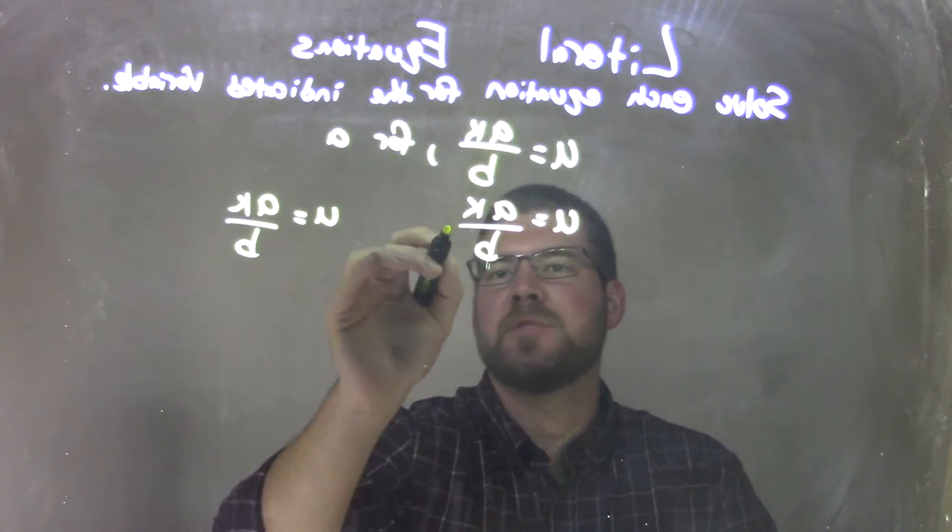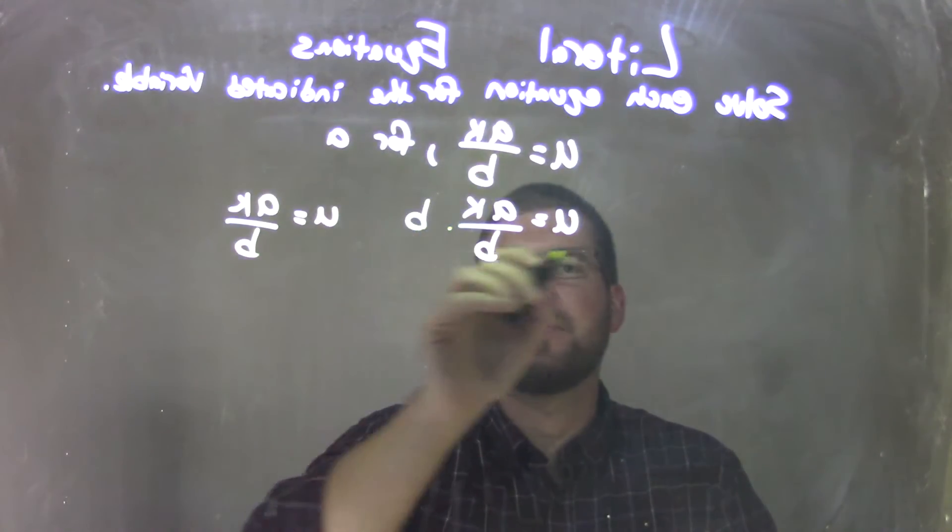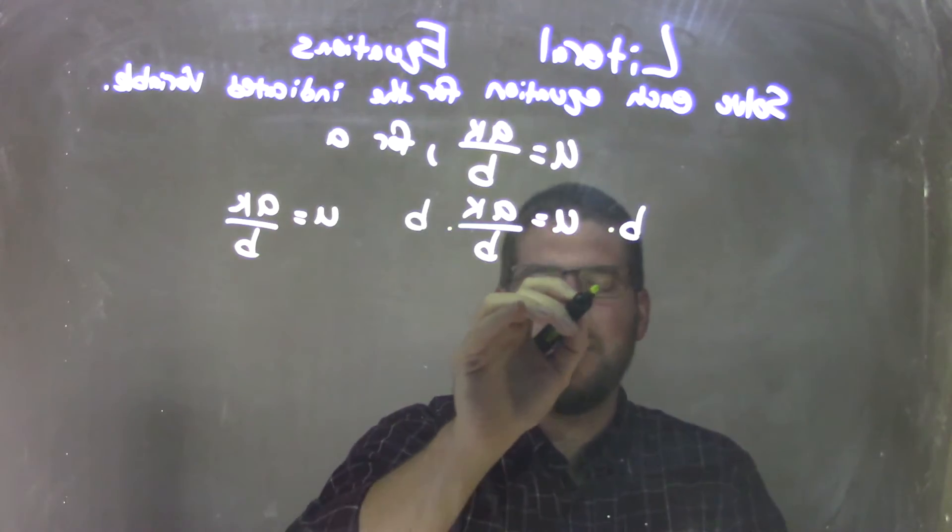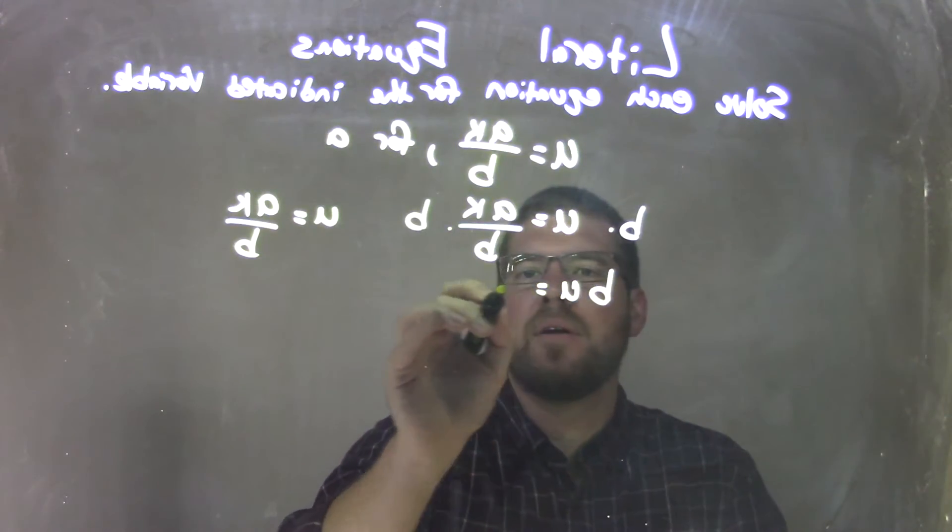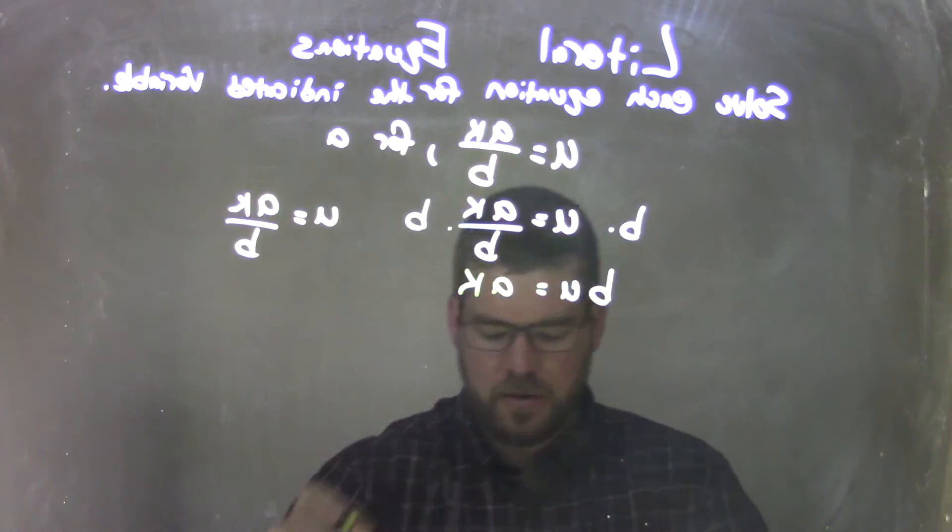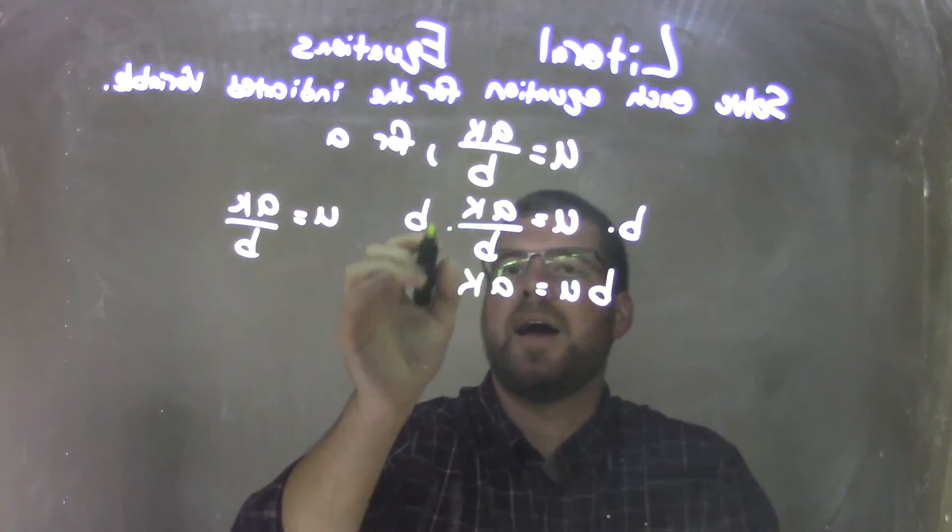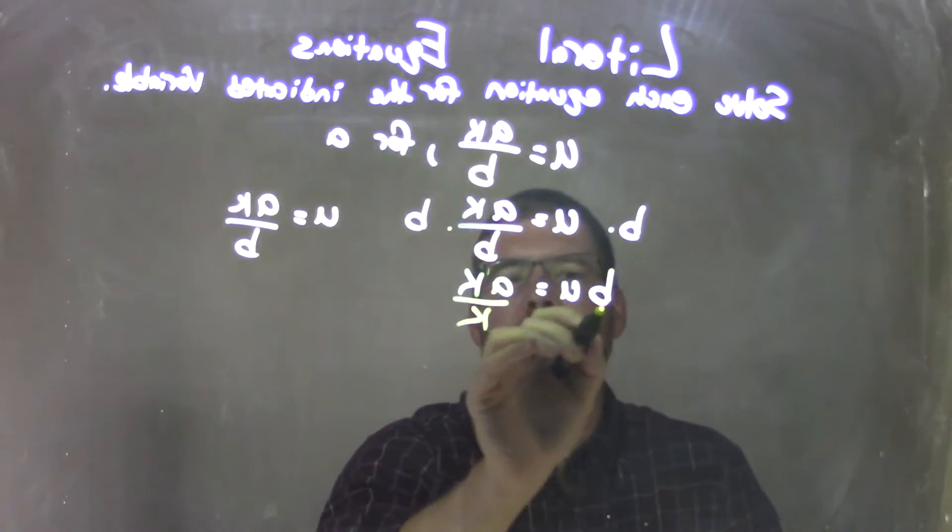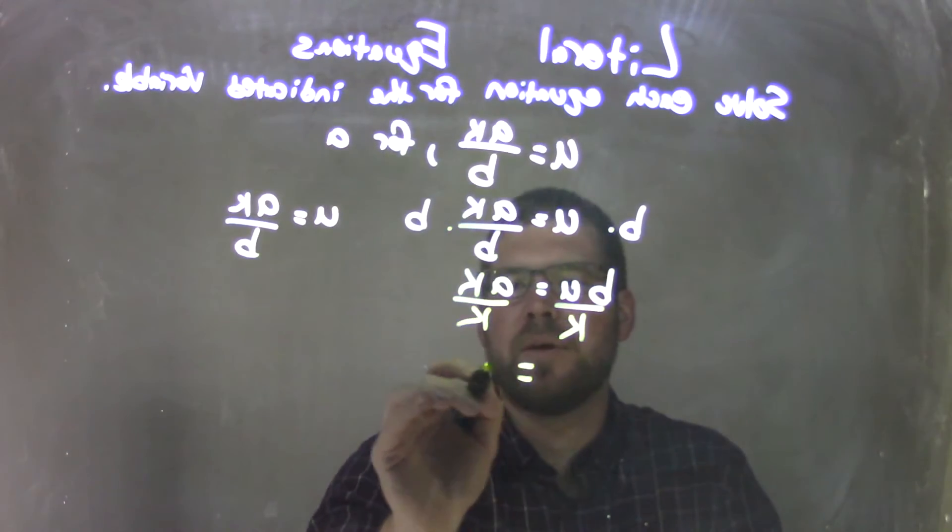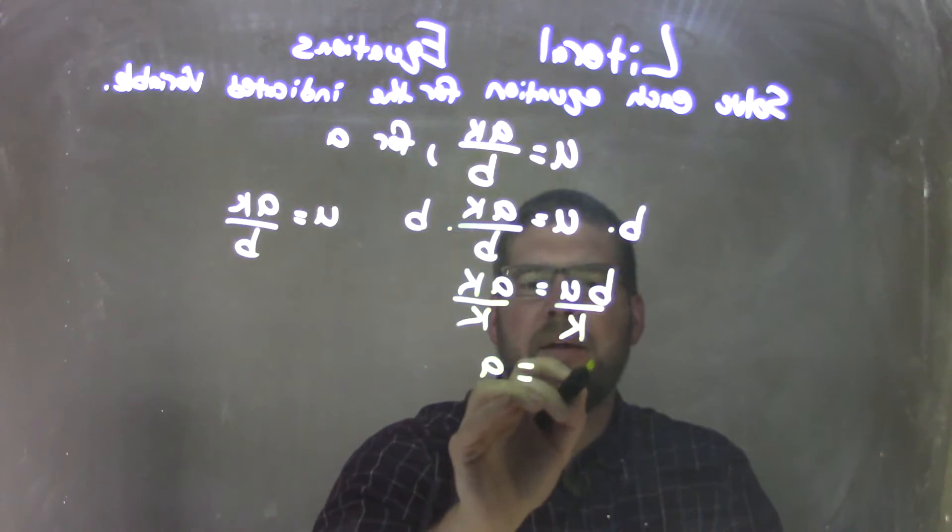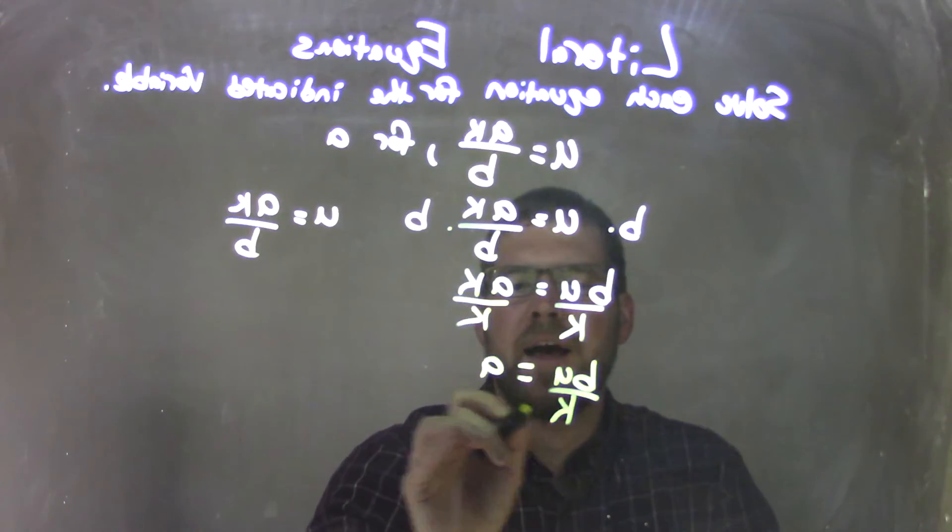I can first, right here, just multiply both sides by B, multiply by B, leaving me with BU equals AK. And I think they have a UB as well, so it doesn't matter. Then I need to divide by K to both sides, do it separately. K, leaving me with A equals on the right and BU over K on the left.